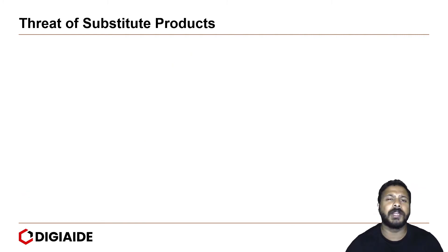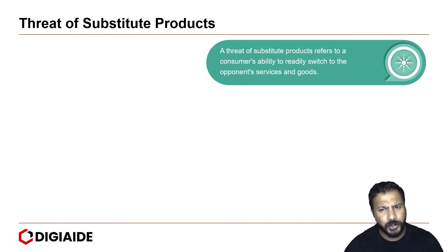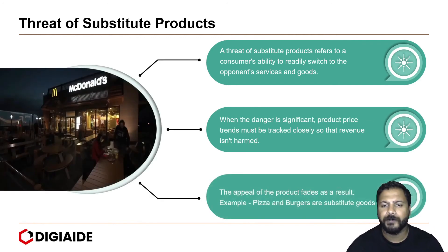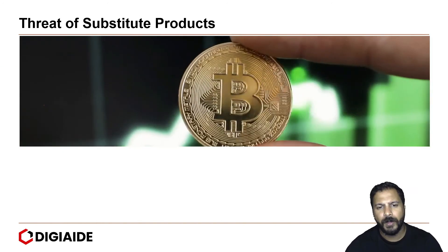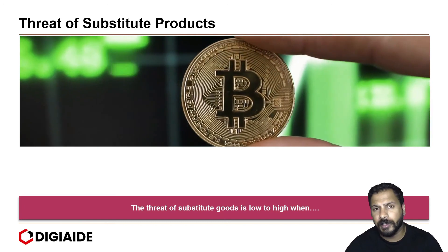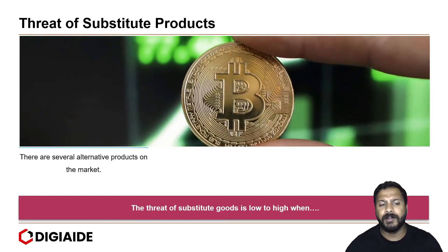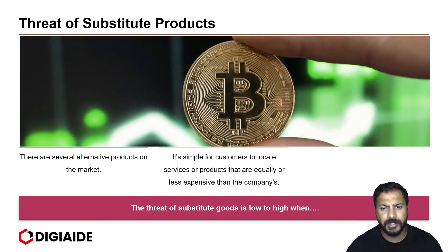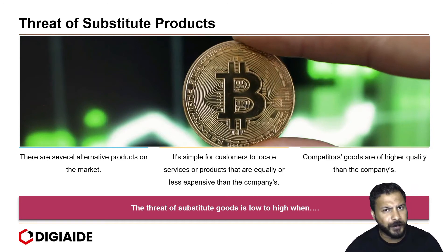Moving on to the next one: Threat of Substitute Products. This refers to a consumer's ability to readily switch to an opponent's services and goods. When the danger is significant, product price trends must be tracked closely so that revenue isn't harmed, and the appeal of the product fades. For instance, pizza and burgers are substitute goods, as is Bitcoin for the currency we have today. The threat of substitute goods is high when there are several alternative products in the market, it is simple for customers to find equally or less expensive products, and competitive goods are of higher quality.